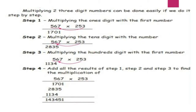Let us solve the multiplication with a three-digit number. I have given you a step-by-step process. Listen to that and do it carefully. Step 1: We have the number 567 multiplied by 253. First, we are going to multiply with 3. Three 7's are 21, balance 2. Three 6's are 18, plus the balance 2 makes 20, carry over 2. Three 5's are 15, plus 2 is 17. The first step answer is 1701.